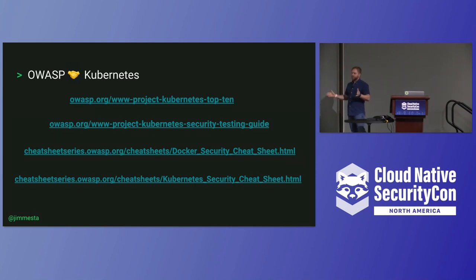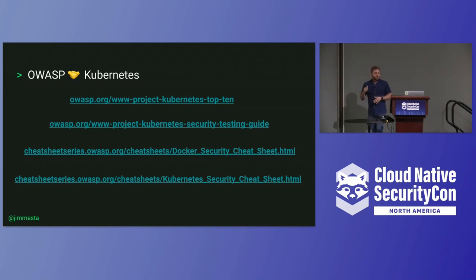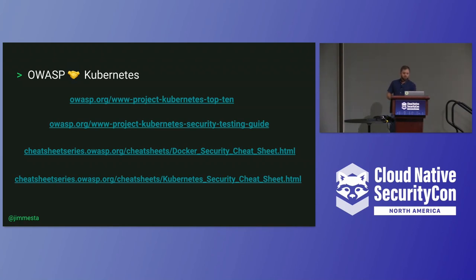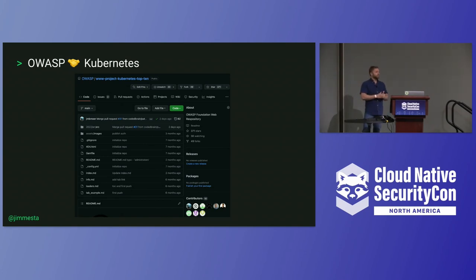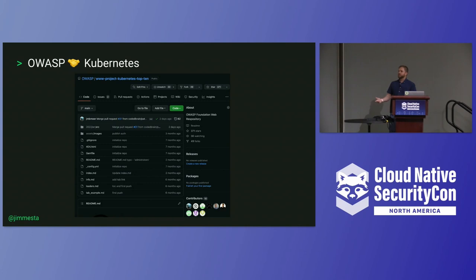It spans the gamut of Docker, serverless, and all sorts of different things. You can see different projects to get involved with, use internally as references, and learn more about the space. We have a Docker security cheat sheet, and I worked on the Kubernetes security cheat sheet last summer. The project's gained momentum — about 400 stars — and it's getting translated into other languages.